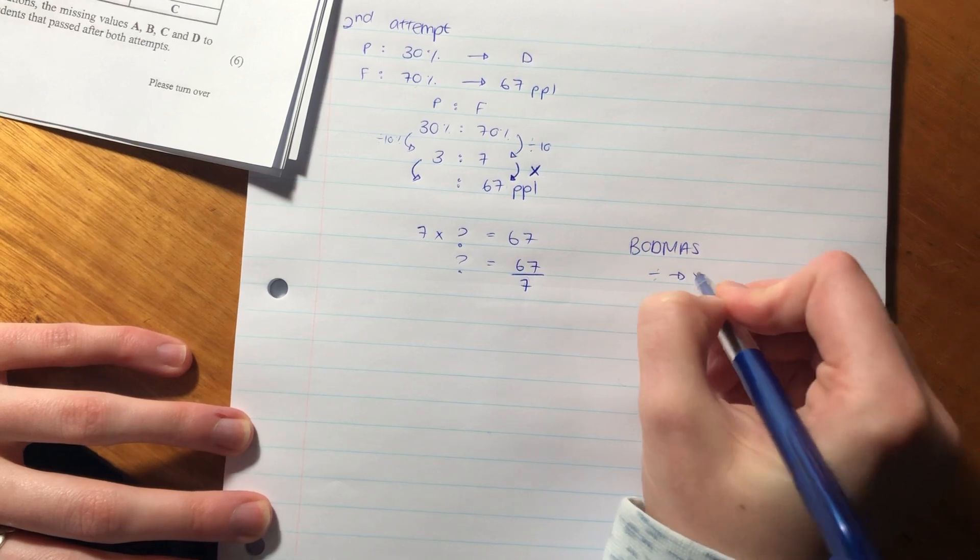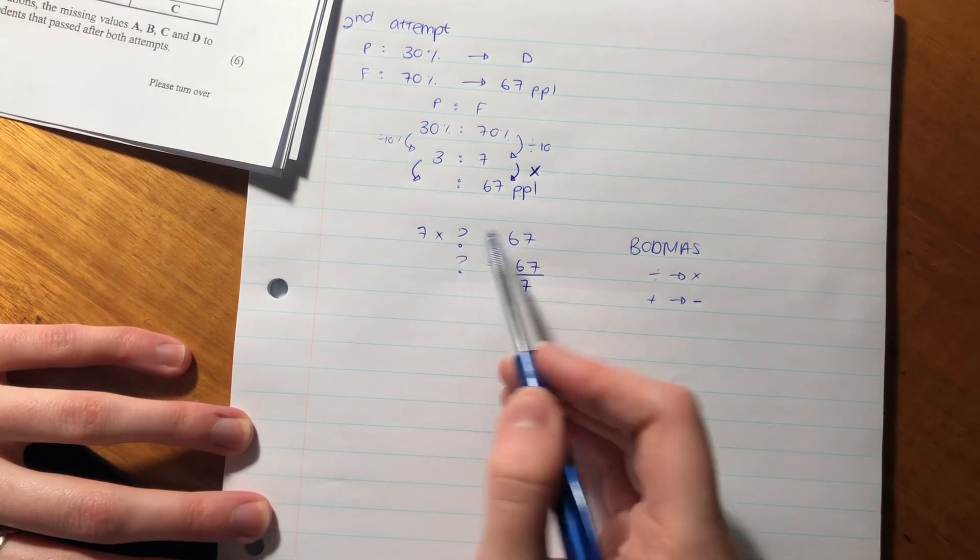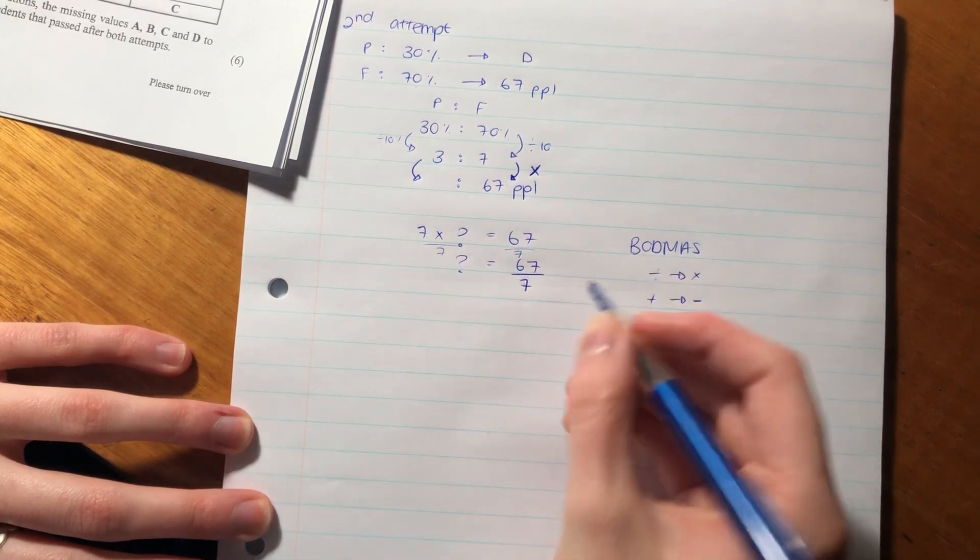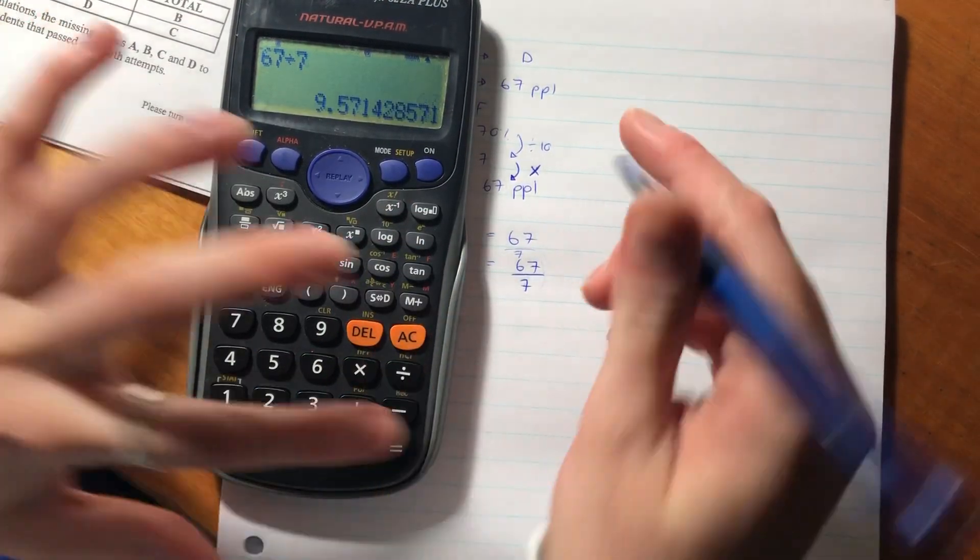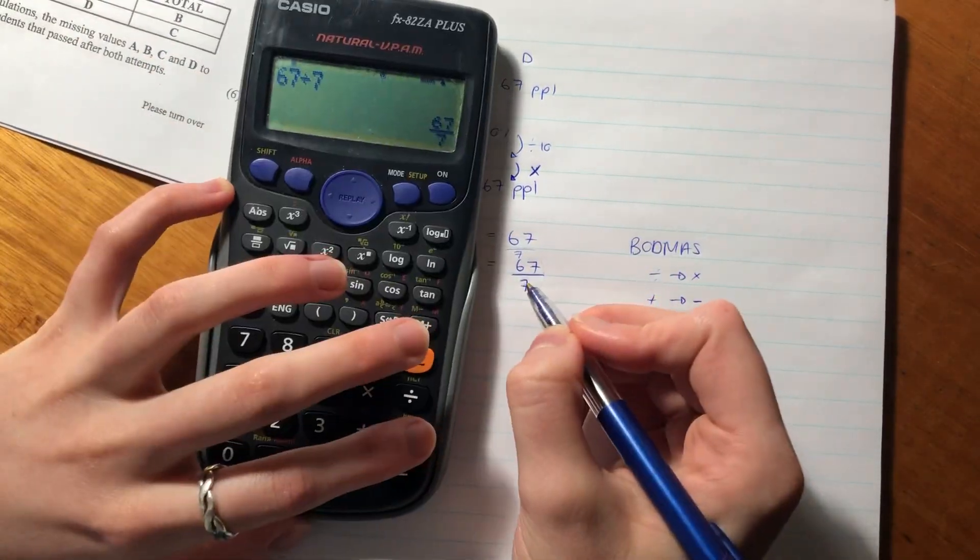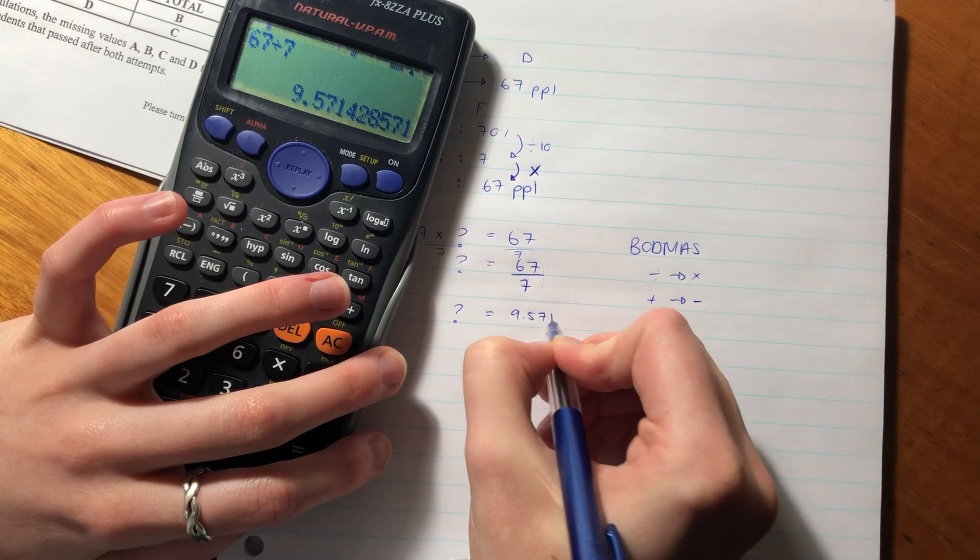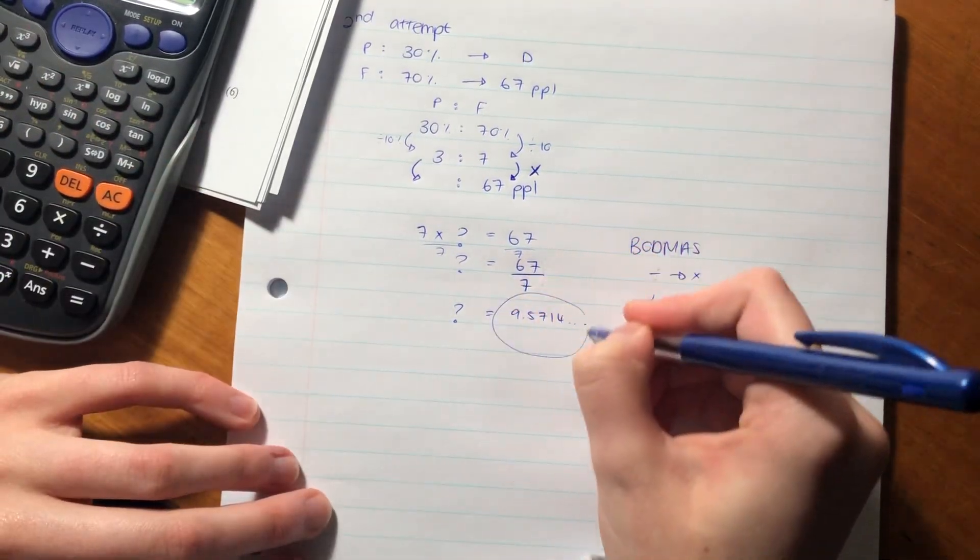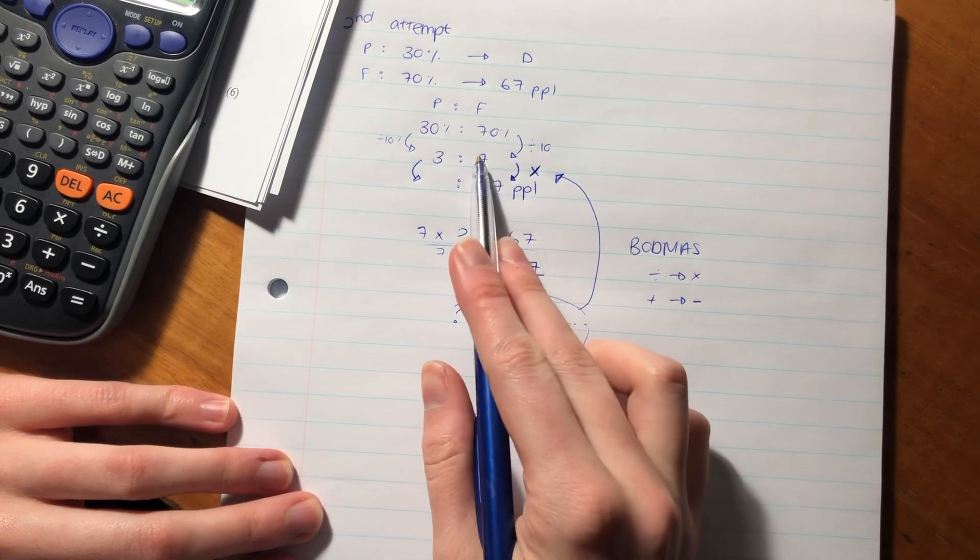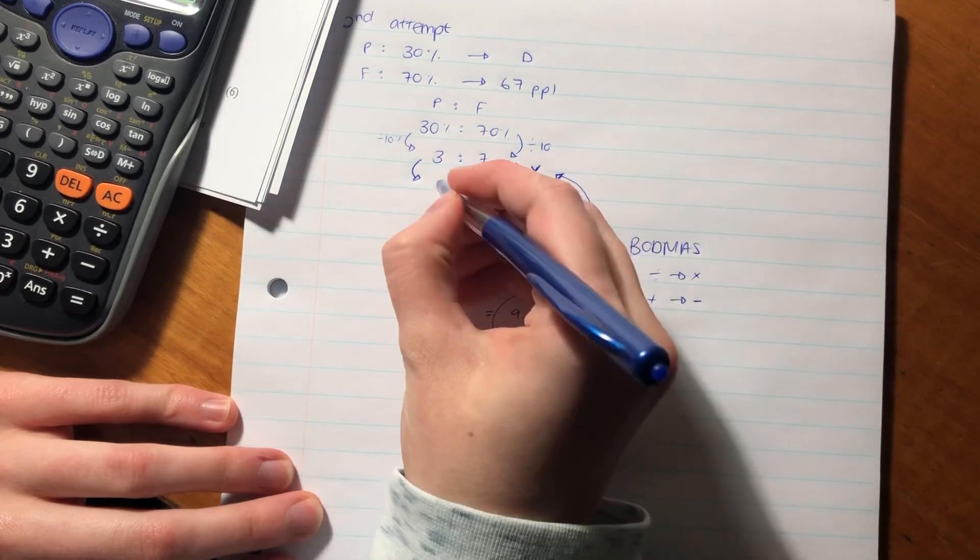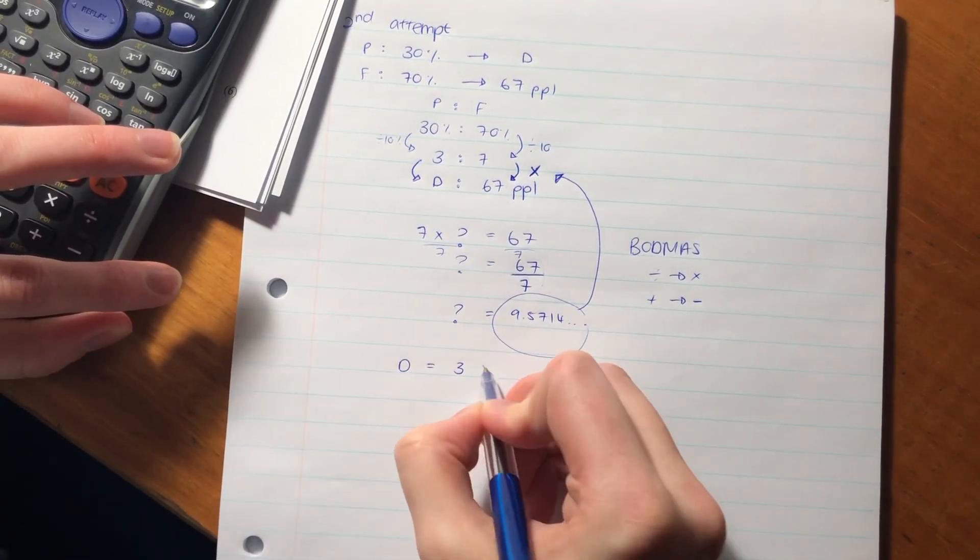7 times something equals 67, so that something equals 67 divided by 7. With BODMAS, division is the opposite of multiplication. If we divide both sides by 7, 67 divided by 7 equals 9.5714. We have to multiply that 7 by this number to get 67, so whatever we multiply 7 by, we also have to multiply 3 by to conserve the ratio. This amount is D.